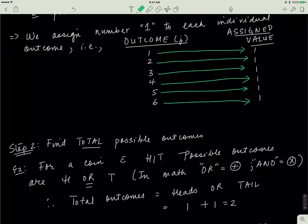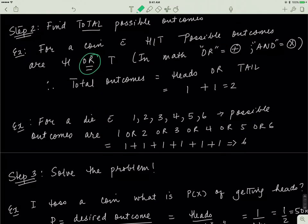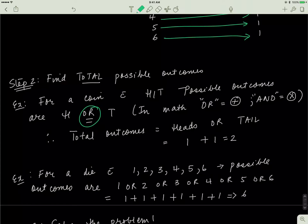The second step is to find the total possible outcomes. If you toss a coin, the two possible outcomes are heads or tails. In mathematics, 'or' means addition and 'and' means multiplication. The outcomes are heads or tails, so the total number is 1 plus 1, which equals 2. If you roll a die, the outcomes are 1 or 2 or 3 or 4 or 5 or 6 — those 'ors' become plus signs, giving a total of 6.